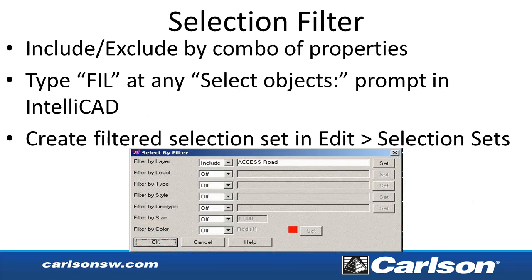There's a new selection filter available any time there's a select objects prompt. It allows you to use several different properties in any combination. In IntelliCAD you can type 'fil' at the select objects prompt, or you can run the Selection Sets command found under the Edit pulldown.